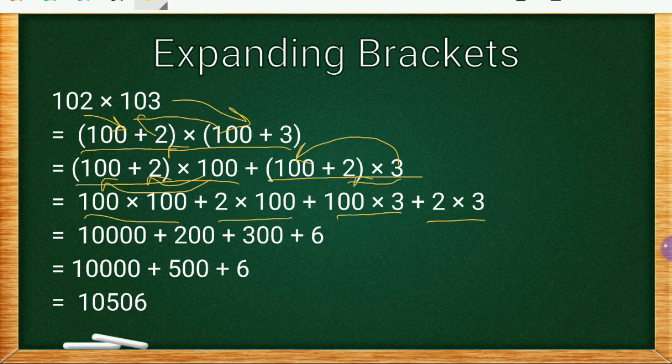100 × 100—just count the zeros: 1, 2, 3, 4—so that's 10,000. Then 2 × 100 is simply 200, 100 × 3 is 300, and 2 × 3 is 6.